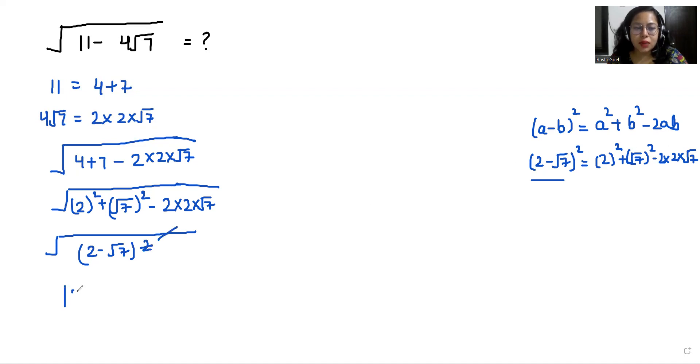So with the help of this square root, this square root eliminates and it comes in absolute form. So |2 - √7|.